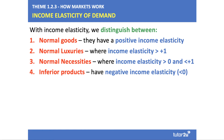When it comes to income elasticity of demand, we make a distinction between different types of goods and services. First of all, normal goods. Normal products have a positive income elasticity of demand, meaning that as income goes up, we spend more on normal goods. Within that category, there are normal luxuries and normal necessities. With a normal luxury product, the income elasticity of demand is strongly positive — the coefficient is greater than 1.